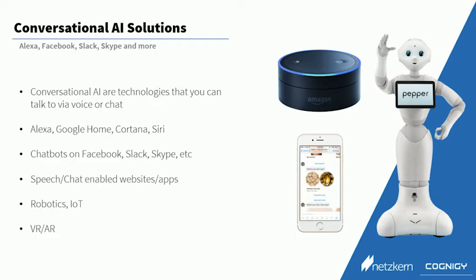Of course we can also speech-enable apps or websites. So you can have a chatbot on a website, or you can have a voicebot on a website or a mobile app that then controls also the app's behavior. Conversational AI can also be integrated into robotics or Internet of Things devices, but also into virtual and augmented reality, where the user can communicate with characters and objects just using their voice.